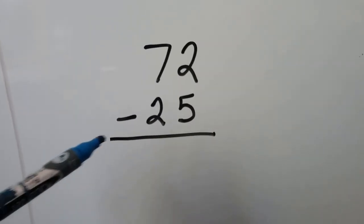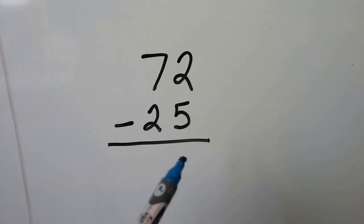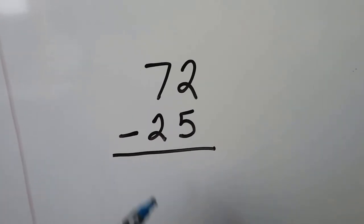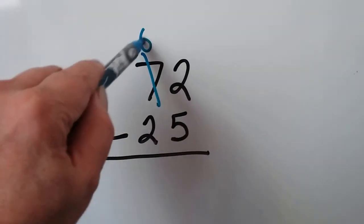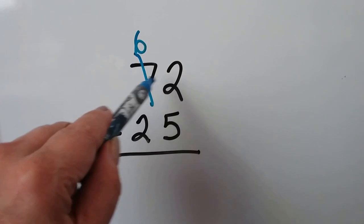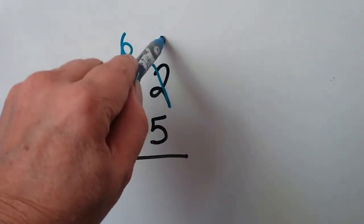Here we have 72 minus 25. We can see the 5 is greater than the 2, so we're going to have to regroup. The 7 becomes a 6. We give that 1 ten to the ones place, so the 2 becomes a 12.